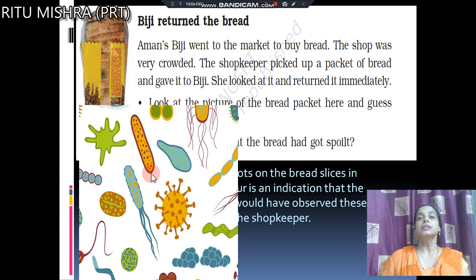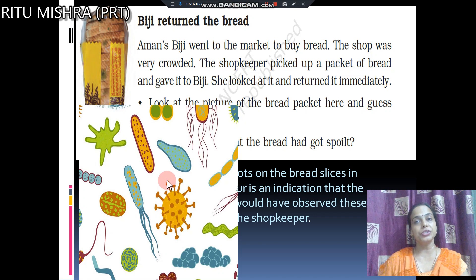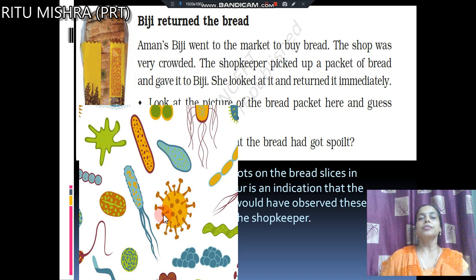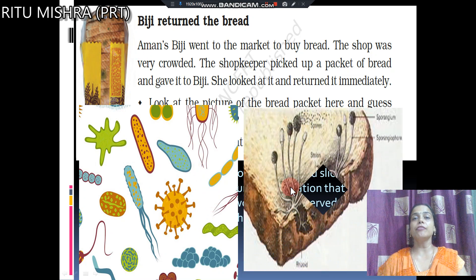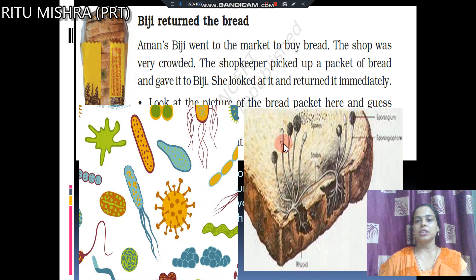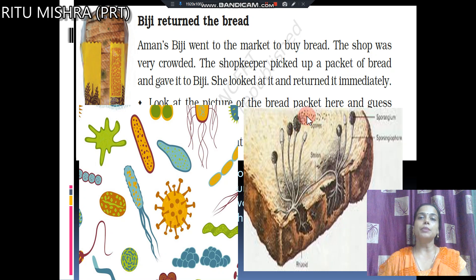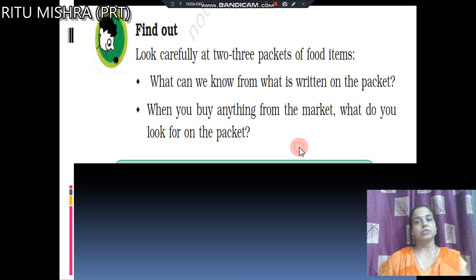These microorganisms keep floating in the air. When they get favorable conditions — such as food to feed on, humidity, and proper warmth — they grow and spoil the food. The main reason behind bread spoiling is fungi. The fungus grows on the bread, and these spores float in the air. When they get bread or something they can grow on, they will grow on it.